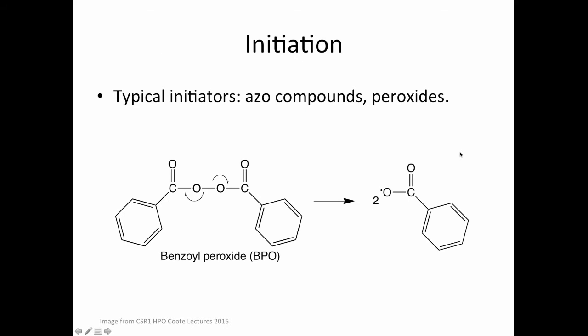Initiation is the only step of polymerization which does not involve the monomers. In order to start a polymerization reaction, we add a small amount of a chemical called an initiator to our monomer solution. Initiators are usually either azo compounds or peroxides. Heat or light is then used to break a bond in the initiator.